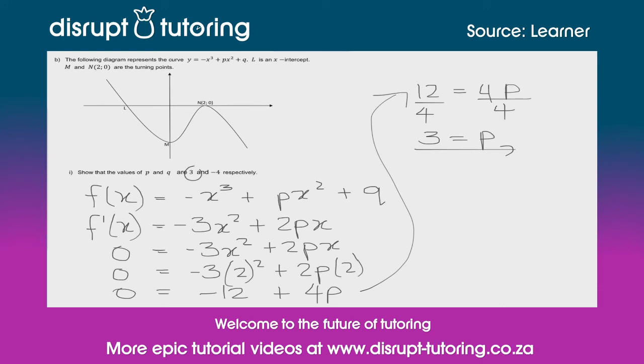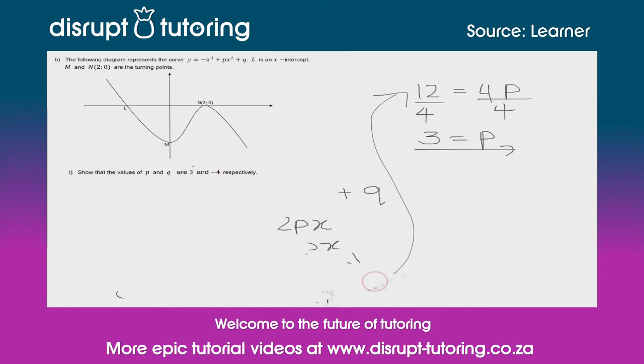Now we need to solve for q. And what's very useful here is because we found p, we can just put p straight into the original equation that they've given us there. And we can then subs in that point to find q. I'm going to give myself a little bit of space now, just for this final question.